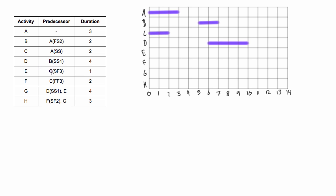Activity E depends on activity C, and it's a start-to-finish relationship with a lag of three. The start-to-finish relationship is the weirdest one. It's a lag of three, so we come out from the start of C and go one, two, three. Because it's a start-to-finish relationship, E can finish three days after C starts. With a duration of one, we count back one from there, so activity E happens for just that one day.